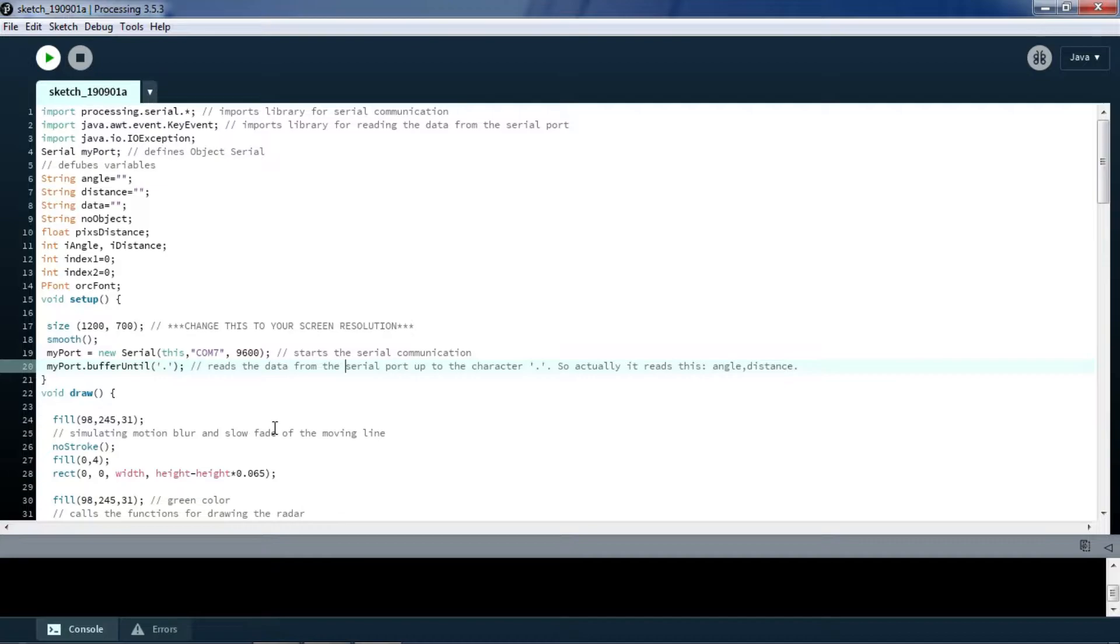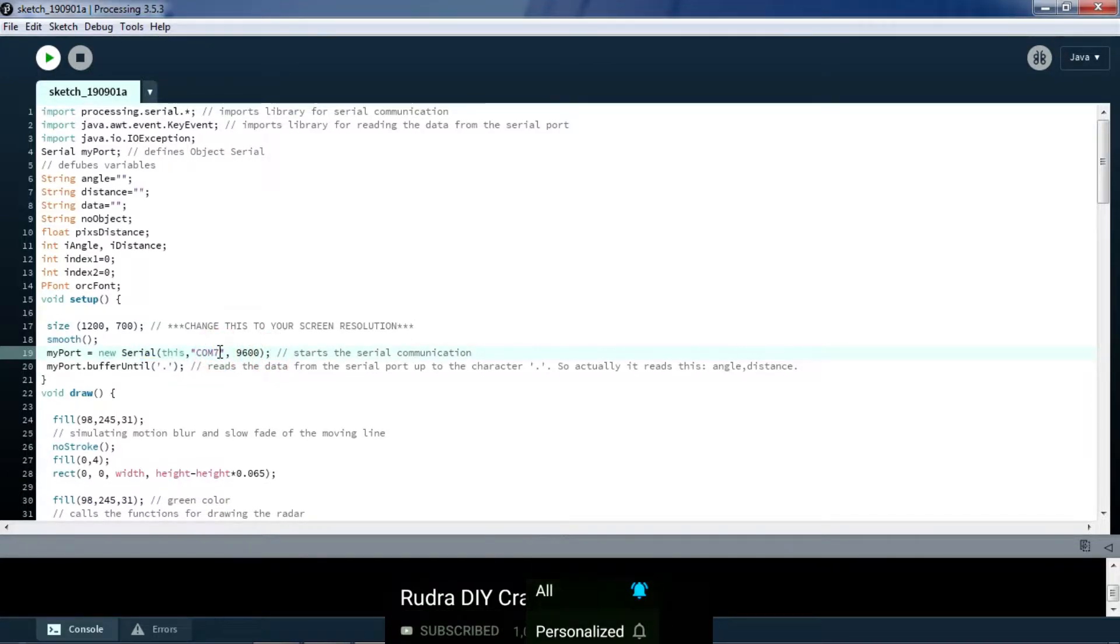What you need to check out in this code is which COM port you have selected here in the processing software. As we have selected COM7 for Arduino Uno, we are going to select COM7 in the processing software.